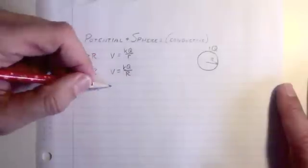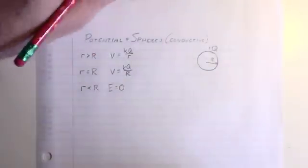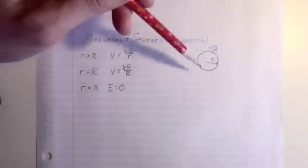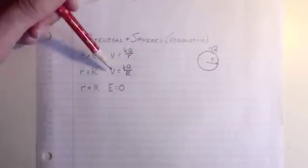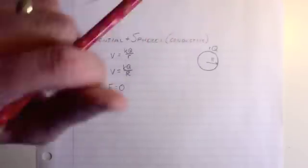Now let's look at r less than R. A lot of people think, well, the E field is zero inside a conductor. Yeah, that's good, and that's true, but a lot of people then say the voltage must be zero. Remember, the voltage is related to how much work it took you to get there.